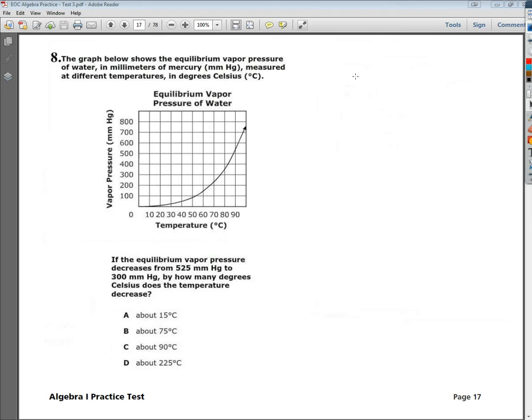The question says, if equilibrium vapor pressure decreases from 525 millimeters of mercury to 300 millimeters of mercury, how many degrees Celsius does the temperature decrease? It's a really wordy problem, it looks super complicated, but it's absolutely not.